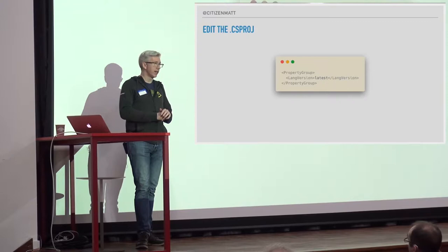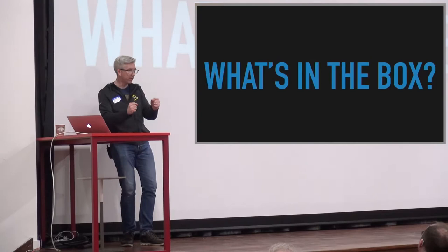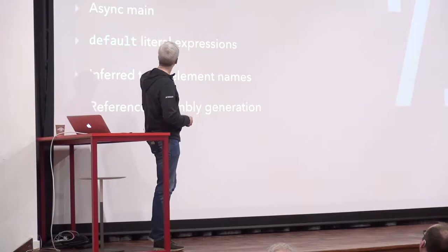What do we get with our terribly exciting C# releases? Well, 7.1 is pretty small — not many things, about four items on the list. Let's quickly go through them; it's only slightly painful. The first one is async main, which is actually quite a nice little feature.